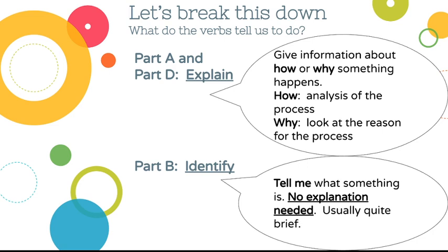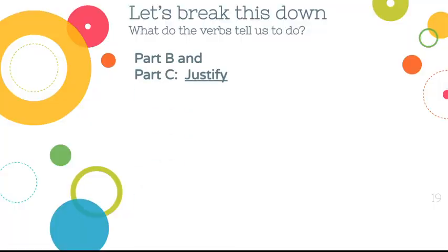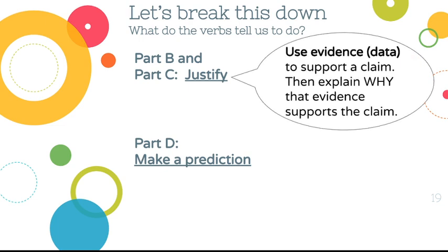Think of it this way: if I asked you to identify yourself, you'd say your name — you wouldn't give your whole life story. Parts B and C also ask you to justify. Justification means using evidence to support a claim, then explaining why that evidence supports the claim. If you've practiced the CER framework — claim, evidence, reasoning — the reasoning portion is the justification.